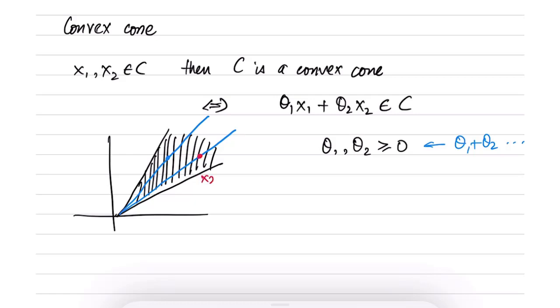This is the point x2 and this is the point x1. This is the line θ2x2 because you are multiplying x2 with an arbitrary number or essentially you are scaling x2, and this is θ1x1. So what is the set θ1x1 plus θ2x2?